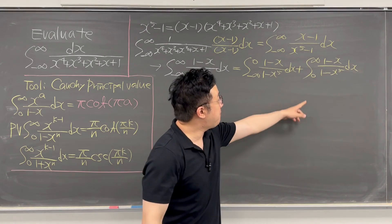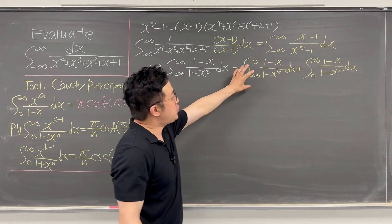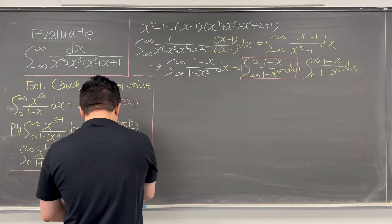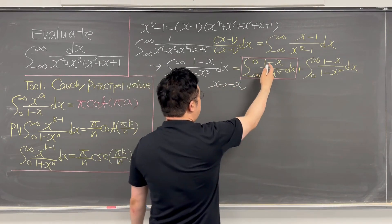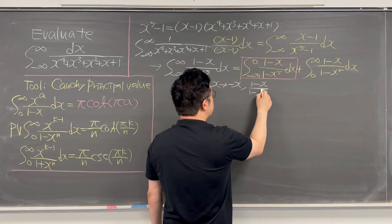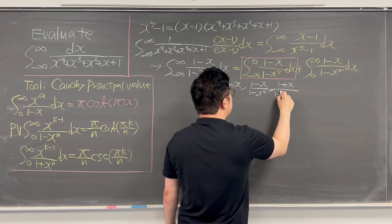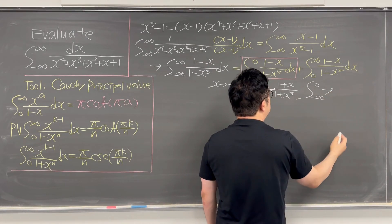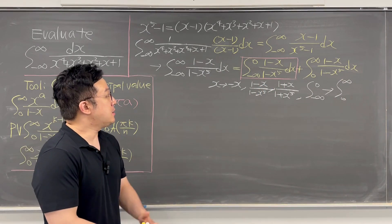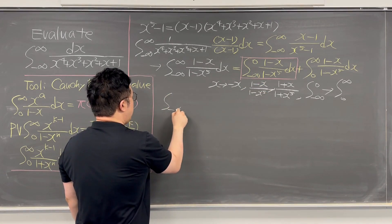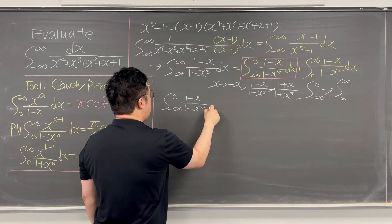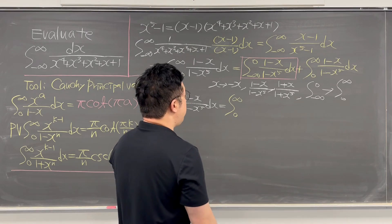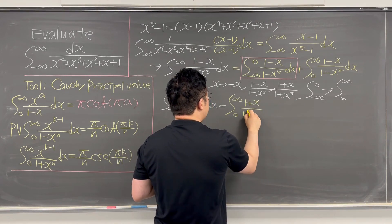The second integral is fine since it goes from 0 to infinity. For the first integral, we need to switch the bounds to use our tools. So we make the substitution x to negative x. Under this substitution, 1 minus x over 1 minus x to the power of 5 becomes 1 plus x over 1 plus x to the power of 5, and the limits convert from negative infinity to 0 into 0 to infinity, as we want.